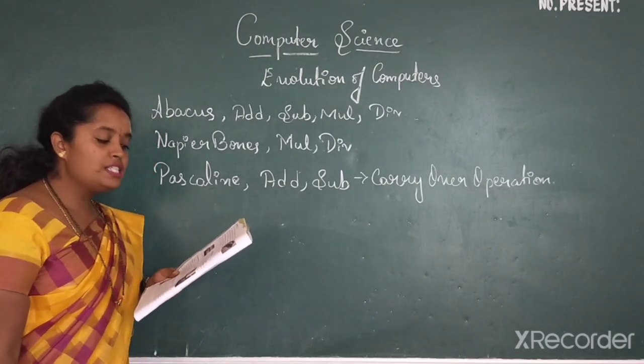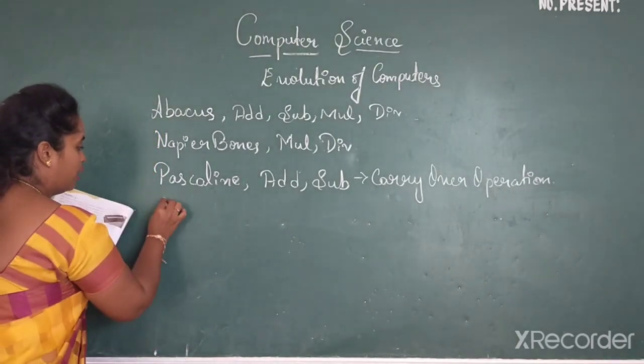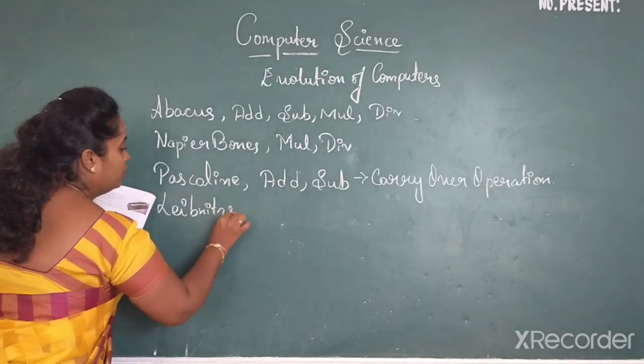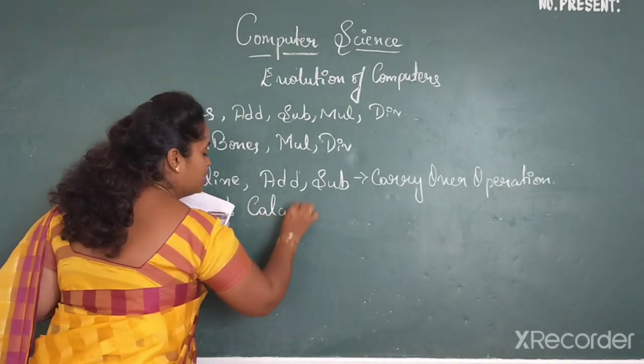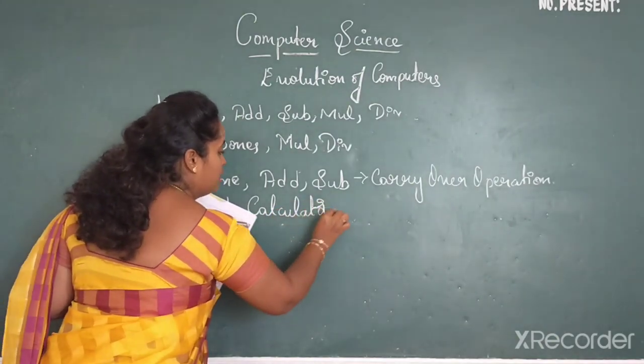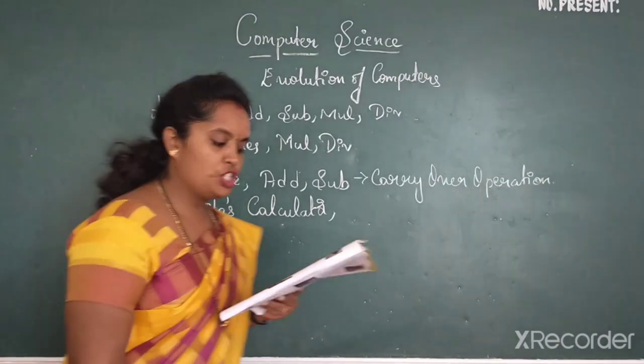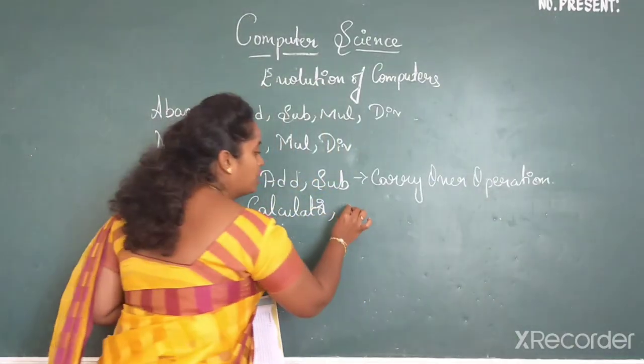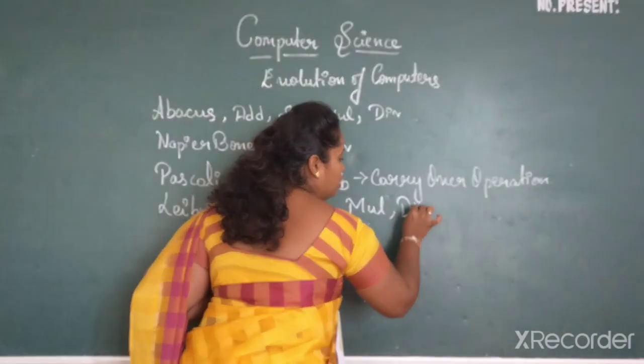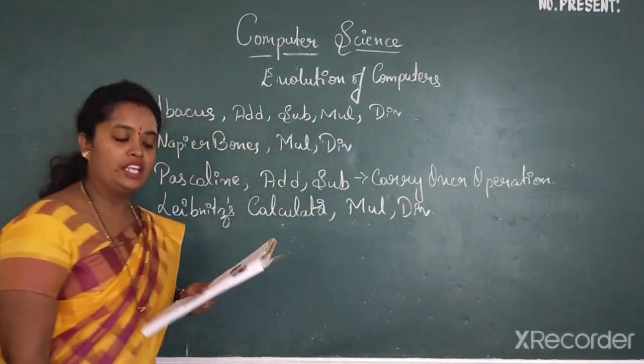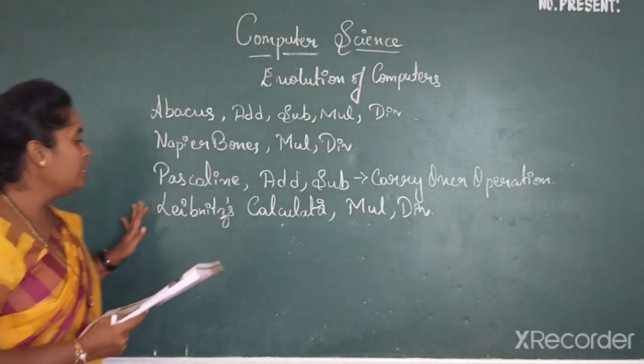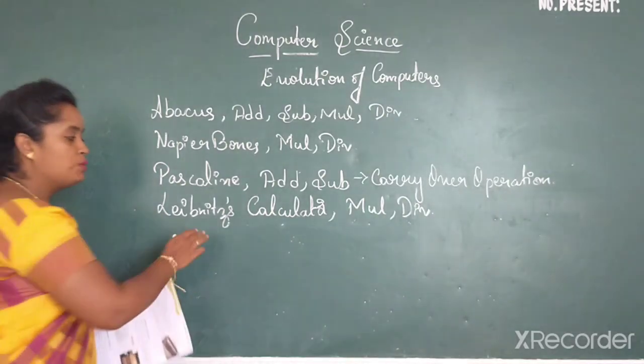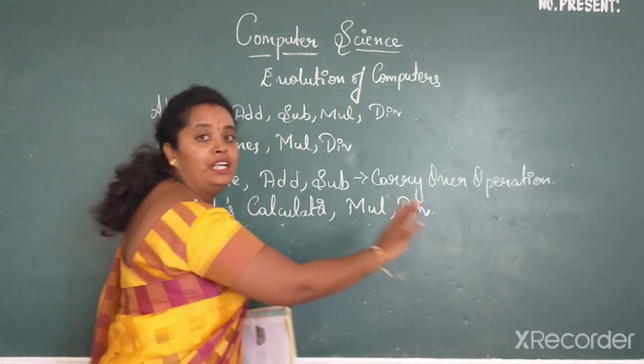Then comes your Leibnitz calculator. Scientist named Leibnitz invented this machine to perform mainly the multiplication and division. It was an improved version of the Pascaline machine. This machine was made up of steel and copper.